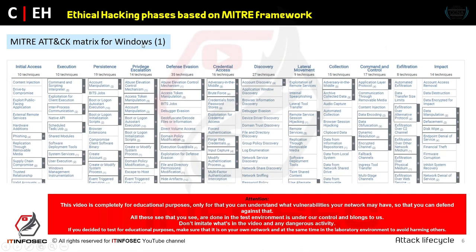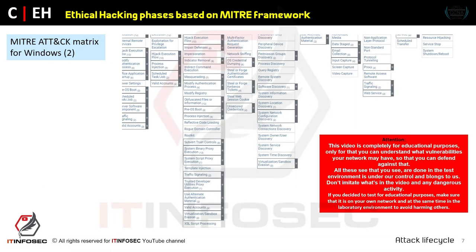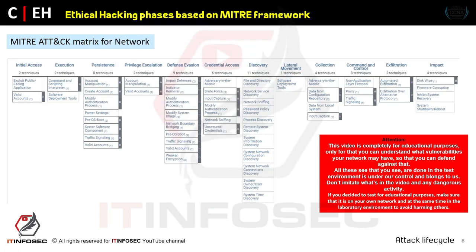This is the first part of the MITRE ATT&CK matrix for Windows, and this is the second part for Windows. As you can see on this second page of the MITRE ATT&CK matrix for Windows, there is a huge amount of items we can perform under an ethical hacking agreement.